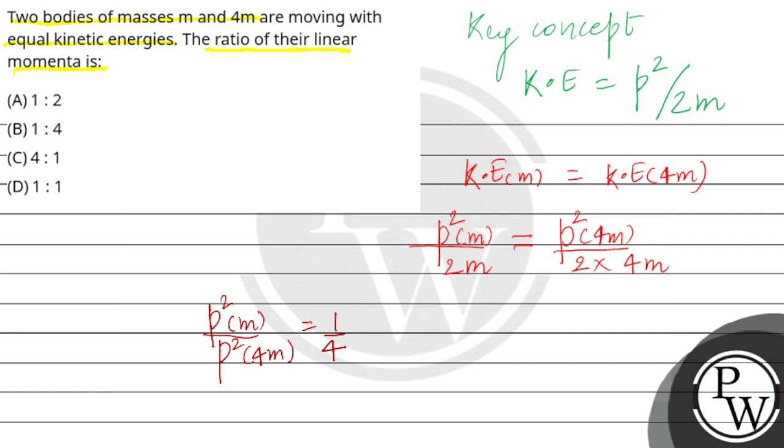From here, we can say the ratio of linear momentum for mass m to linear momentum for mass 4m comes out to be 1 by 2.